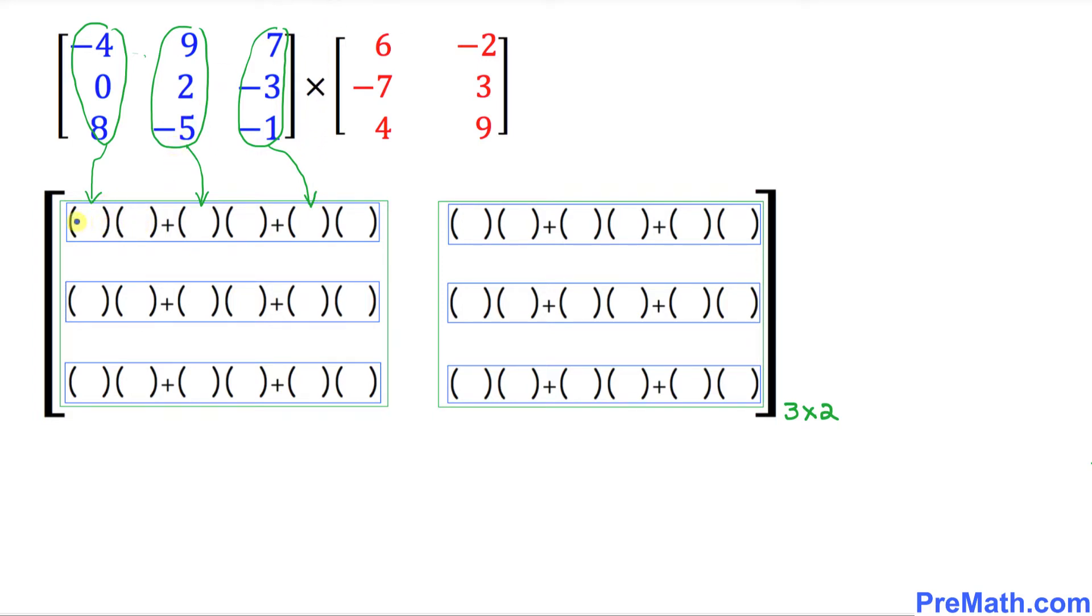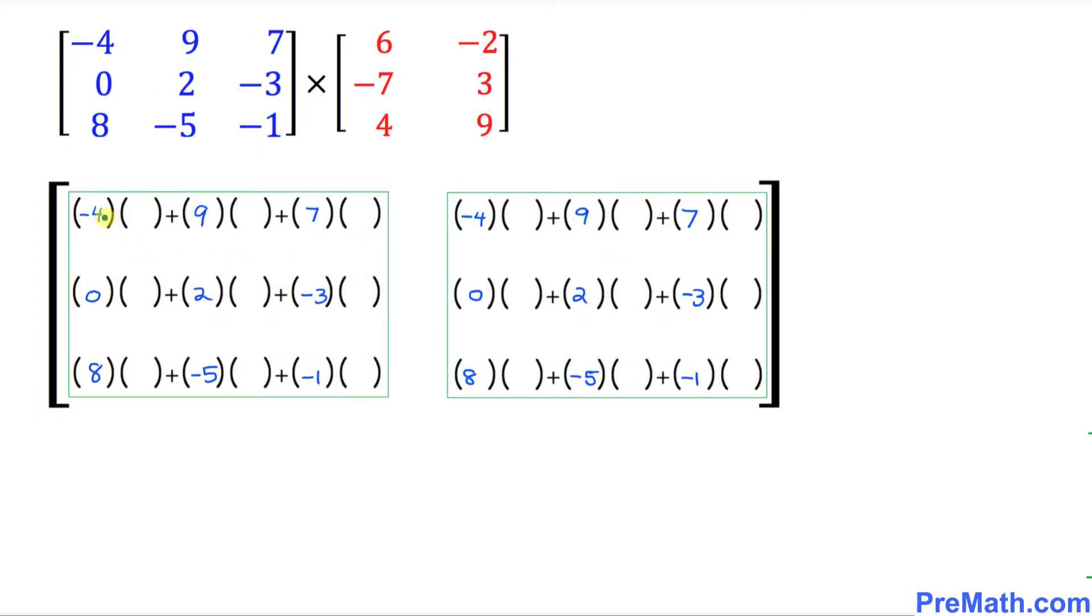Let's go ahead and fill in the blanks pretty quick. So this is going to be negative 4, 0, 8. Here is going to be 9, 2, negative 5. And over here, 7, negative 3 and negative 1. We're going to repeat the same process for this next column as well. And here I have nicely filled out these blue numbers in both columns that made our life easier.